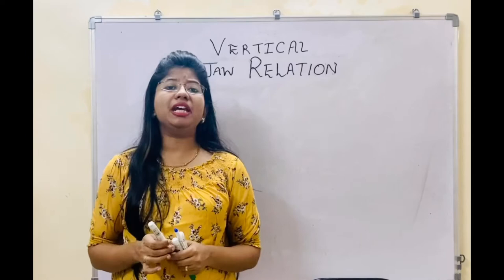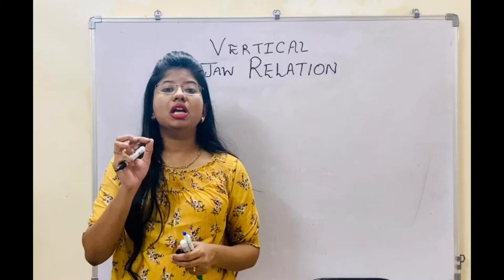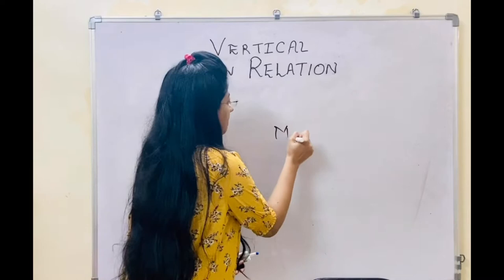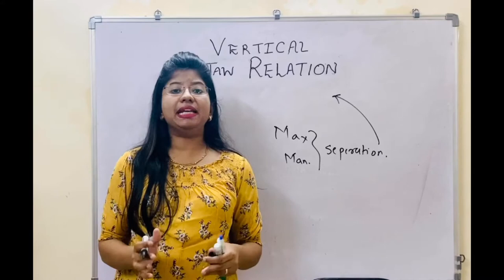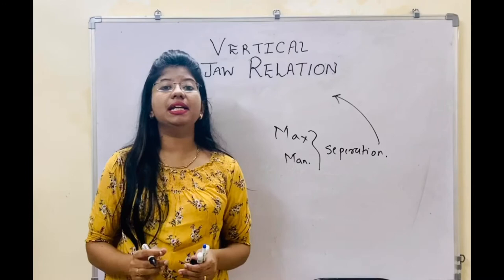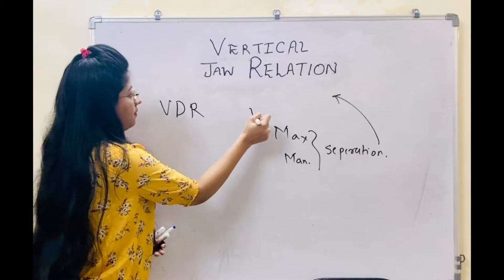The amount of separation between the maxilla as well as the mandible is the vertical relation, or you can say the vertical dimension. So that is the maxilla and mandible — the separation between them is the vertical relation. Vertical relation is divided mainly into two main types: vertical dimension at rest and vertical dimension at occlusion. Now we will see what is meant by rest as well as occlusion.